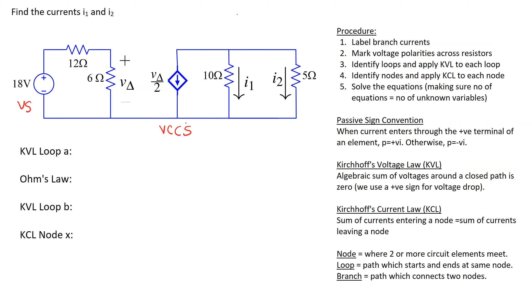Recall that the current in this branch of the circuit is zero because there is no return path for this current. Thus in this circuit we have the input side and the output side, and the coupling between input and output is via the dependent source only.